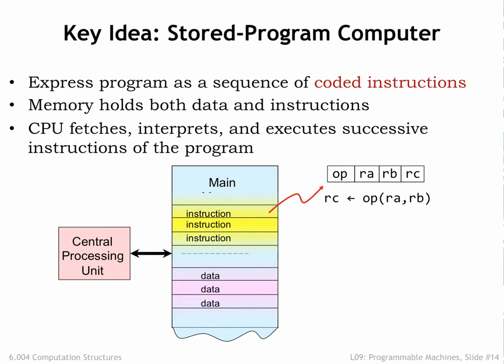It would then move on to the next instruction in memory, executing the stored program step-by-step. The goal of this chapter is to discuss the details of what operations we want the CPU to perform, how many registers we should have, and so on. Of course, some values in memory are not instructions. They might be binary data representing numeric values, strings of characters, and so on. The CPU will read these values into its temporary registers when it needs to operate on them and write newly computed values back into memory.